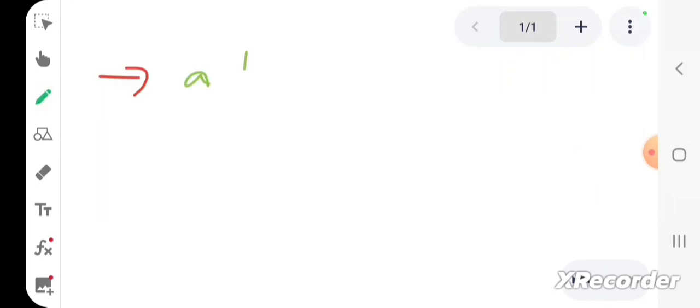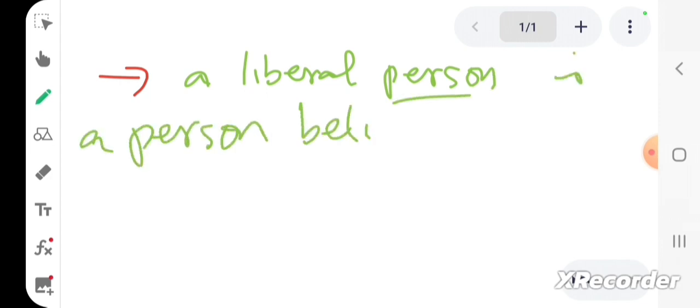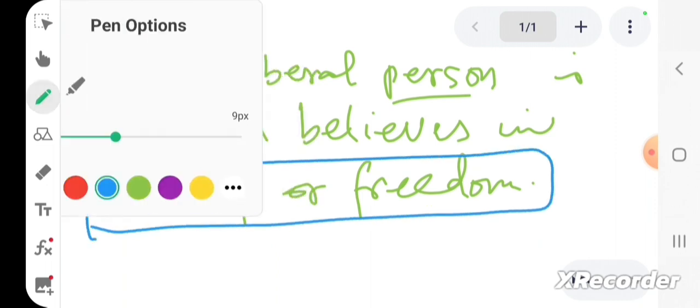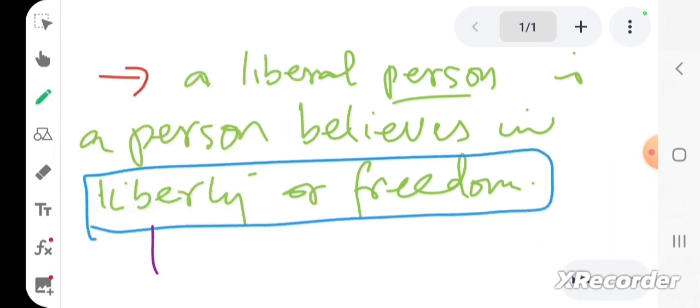A liberal person is a person who believes in liberty or freedom. When we talk about liberty and freedom, we are talking about it as a value.